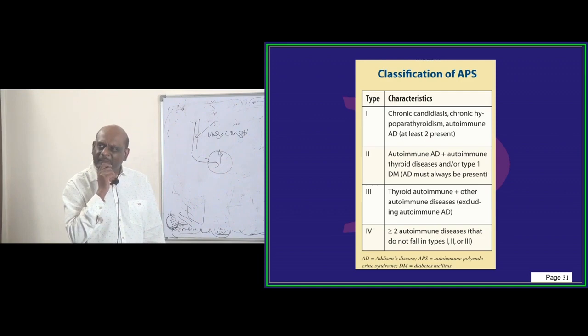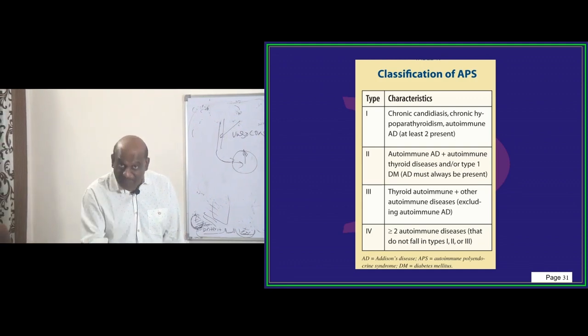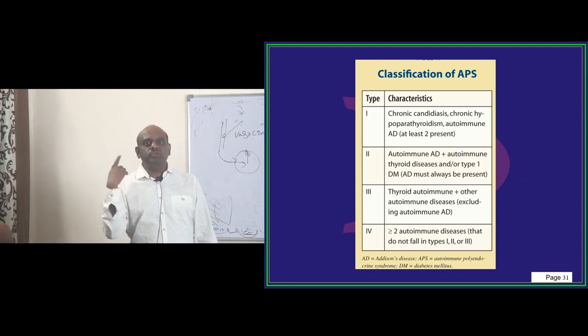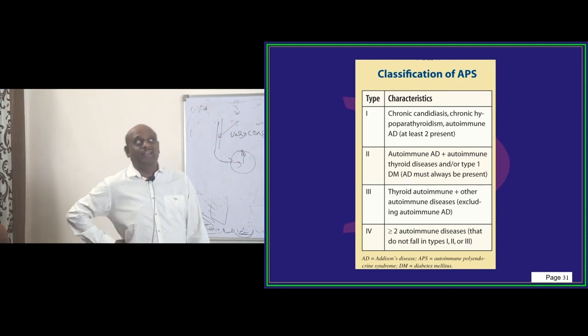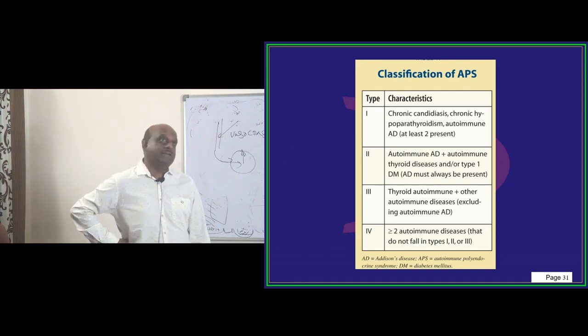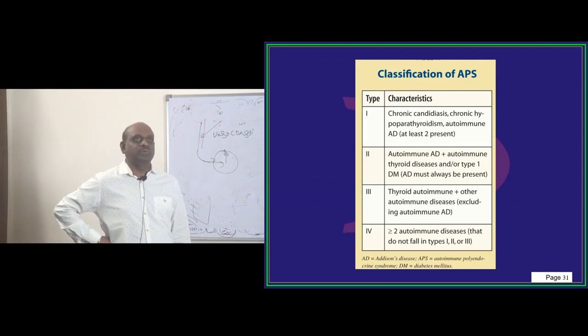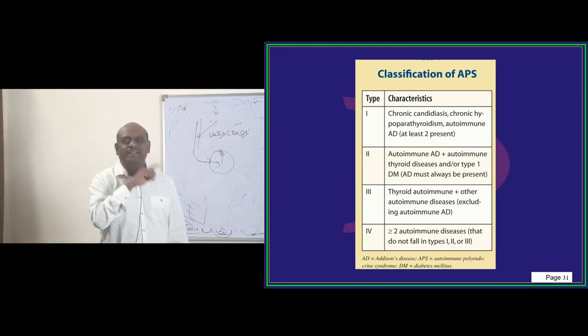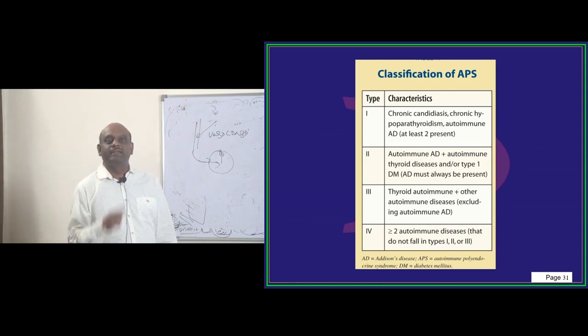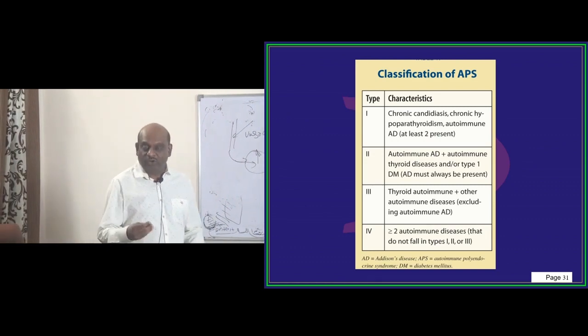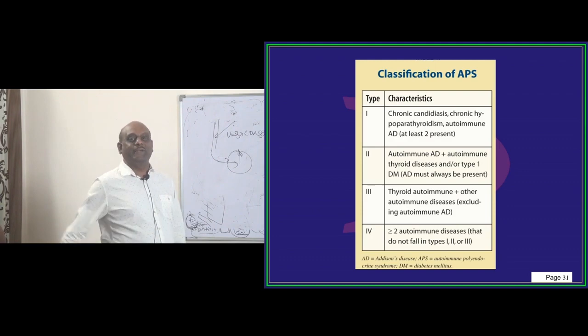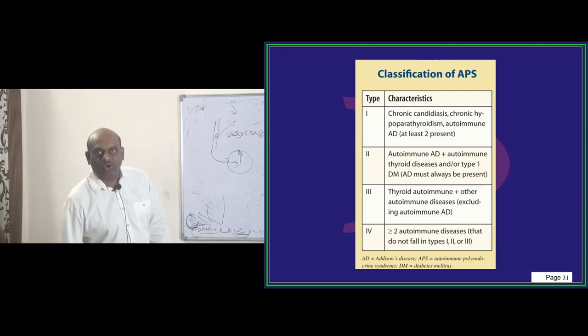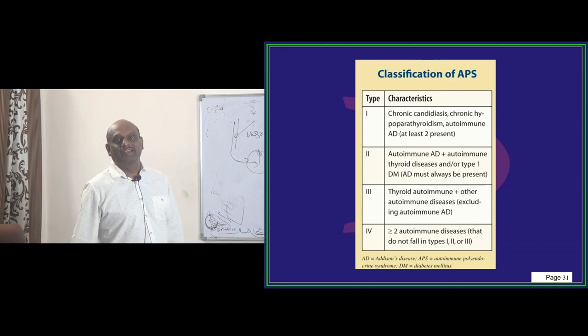He used to always think like Sherlock Holmes. Hypoglycemia, hypotension, pigmented, asthenic. Why hypoglycemia? I am expecting hyperglycemia. Oh, candidiasis. Candidiasis with diabetes - why is hypoglycemia happening? Suddenly the bulb opened. We were all taking food in the hostel. He just said 'I got the diagnosis of the case' and ran away. That was a post-duty night. He immediately ordered serum cortisol levels and it turned out to be Addison.